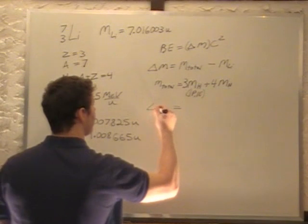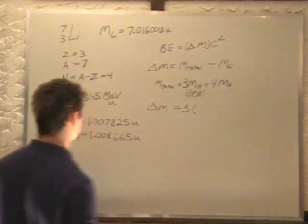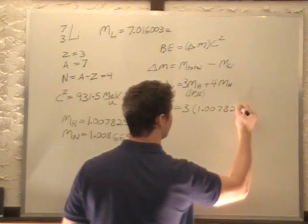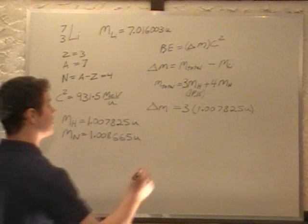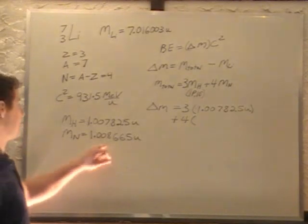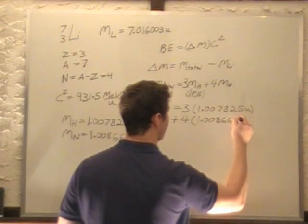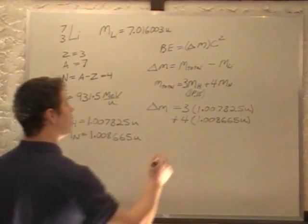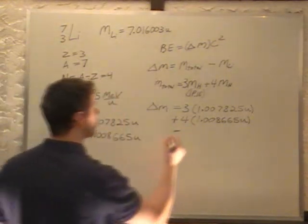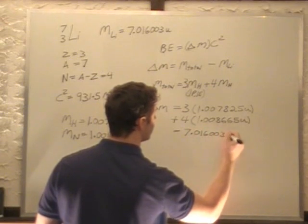So, delta M is now mass total. So, three times the mass of hydrogen, 1.007825U. Okay, that's our mass of hydrogen. Plus four times the mass of a neutron, 1.008665U. Okay. Minus the mass of the lithium. Now, the mass of the lithium is given 7.016003U.